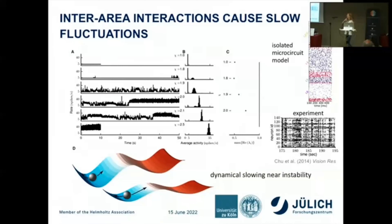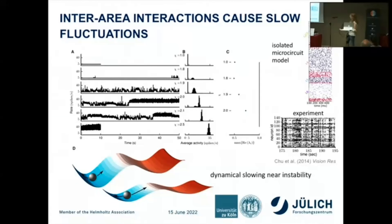We turn on the simulation and initially get a boring state. It turns out we need to increase the strengths of synapses between areas compared to within areas to obtain slow fluctuations, and we need to increase synaptic strengths more onto inhibitory neurons than excitatory ones to avoid excessive activity. At the right parameter setting, we reproduce the same mix of short and long fluctuations seen in experimental data. Increasing cortical-cortical synaptic strength further causes the network to spend increasing time in a high-activity state, so the network needs to be poised just below this instability.